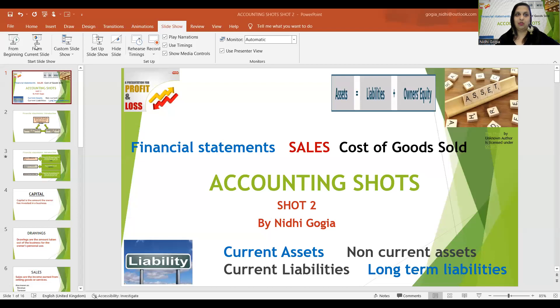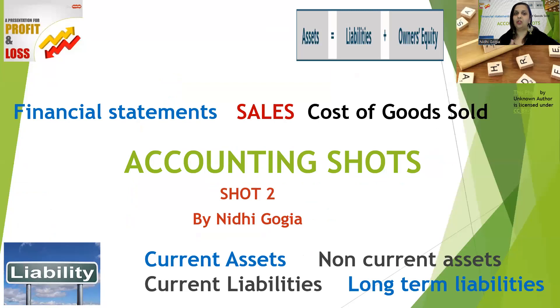Hello everybody. Welcome to my accounting short number two, in which I'm going to discuss some basic accounting terminologies with you. I'm going to start with financial accounting — covering terms like statement of profit and loss, statement of financial position, statement of cash flows, capital, drawings, sales, purchases, cost of goods sold, assets, liabilities, and their types. The learning objective for today is to understand the terms of accounting so that we have a strong foundation in financial accounting.